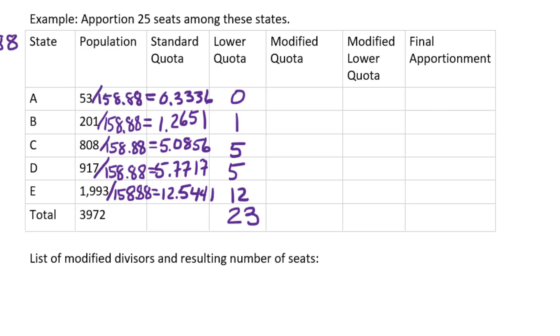However, we always make sure everyone gets at least one seat. So I'm going to cross off the 0 that I had for State A and put a 1 there. And I'm going to cross off the 23. I'm going to say, actually, that's 24 seats that I've handed out. Unfortunately, that's too low.